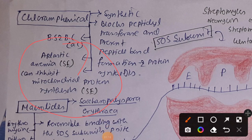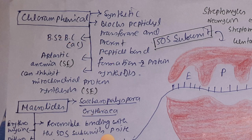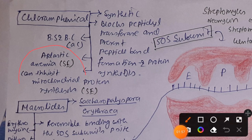Side effects of chloramphenicol include aplastic anemia and inhibition of mitochondrial protein synthesis. To summarize: chloramphenicol is a synthetic antibiotic that blocks the 50S ribosomal subunit, inhibits peptidyl transferase, inhibits peptide bond formation, and thus inhibits protein synthesis. It is usually bacteriostatic but can be bactericidal under adverse conditions.